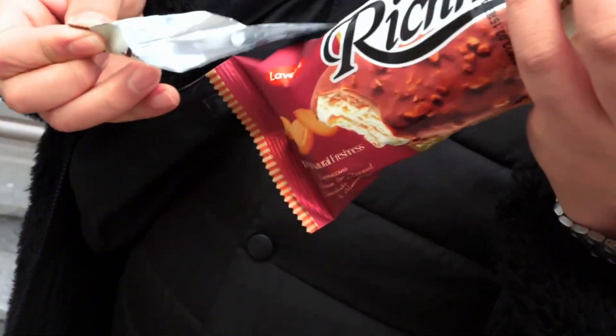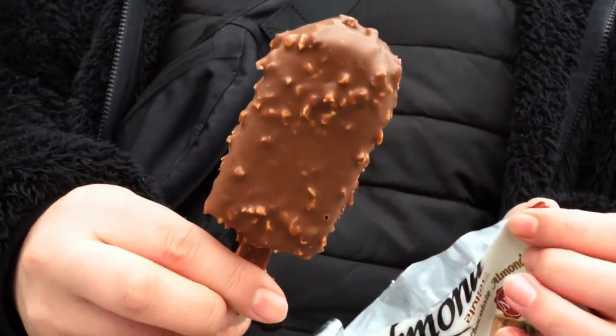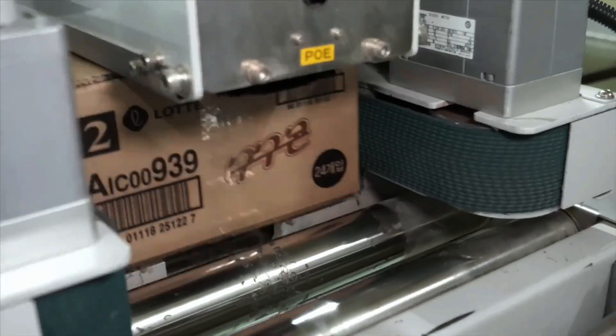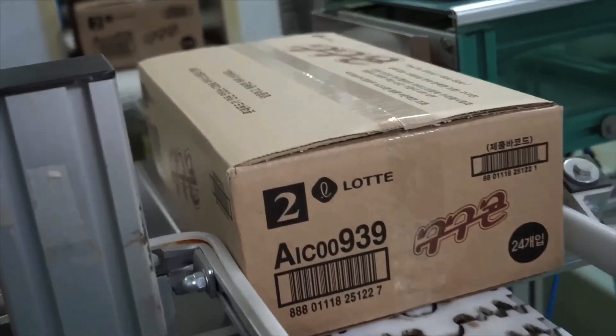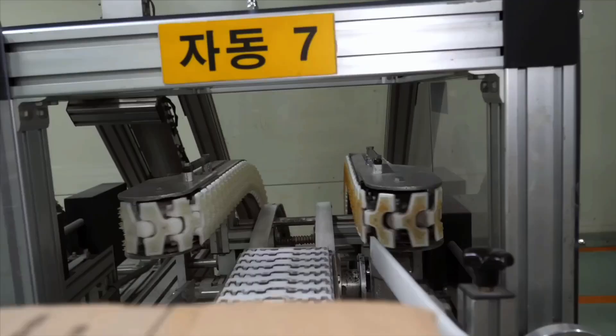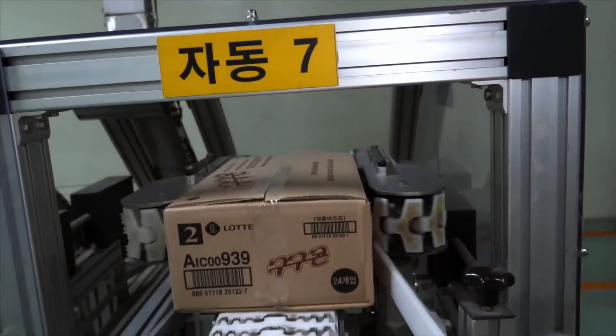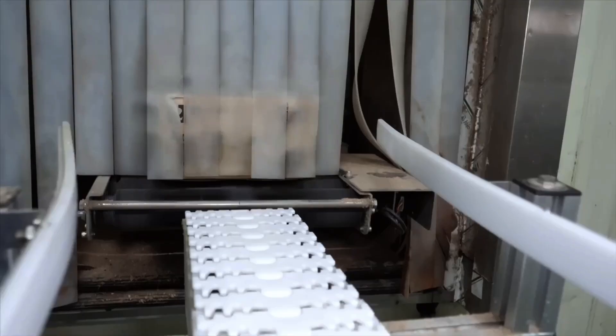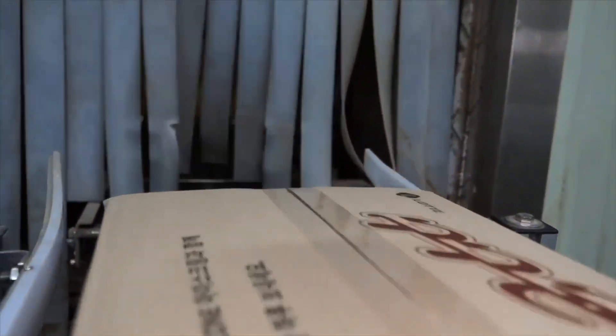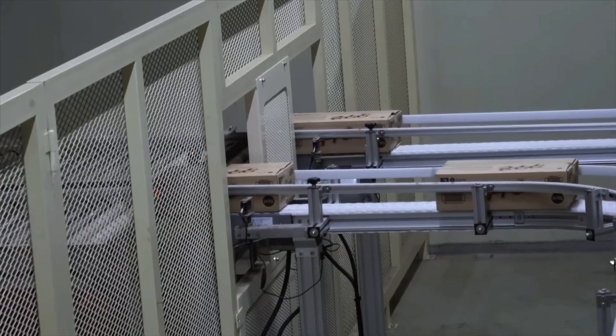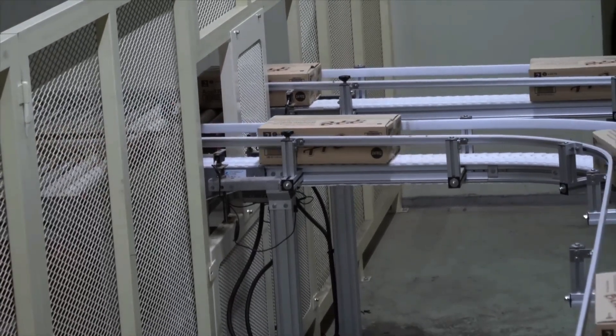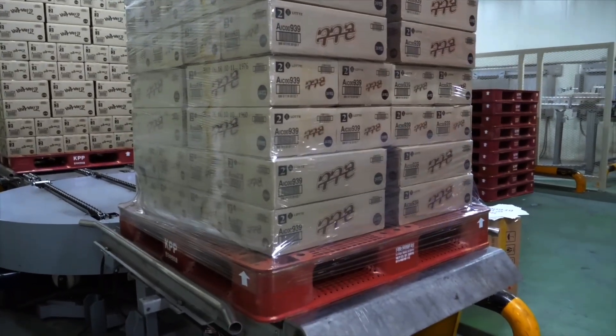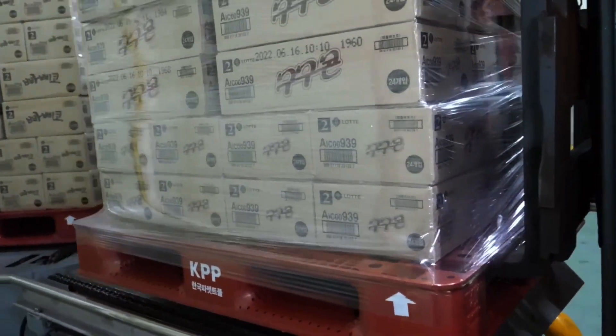Modern factories don't just produce ice cream – they do it responsibly. Solar panels on rooftops, closed-loop water systems, and recyclable packaging are all part of the shift toward sustainable production. Many manufacturers are switching to biodegradable or compostable materials. There's also a growing focus on vegan and low-calorie product lines – making ice cream not just delicious, but more ethical and inclusive.